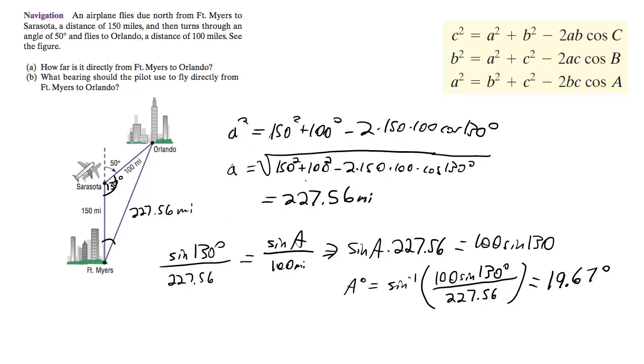What this means is that'll be, if you want to write this down exactly, it's going to be 19.67 degrees. It's going to be 20 degrees east of north.